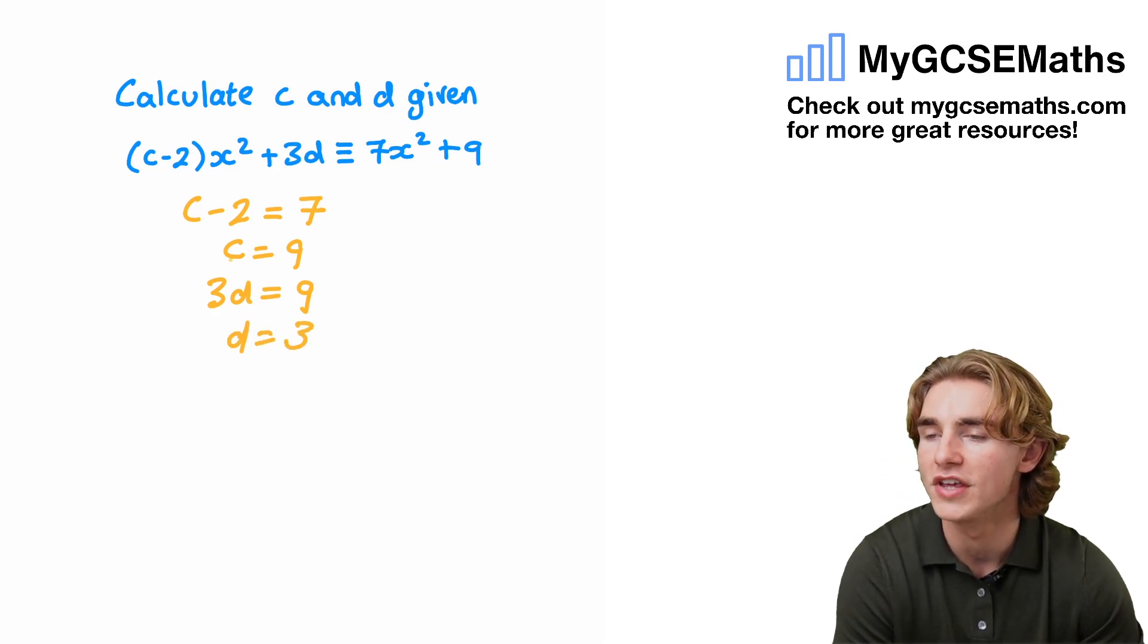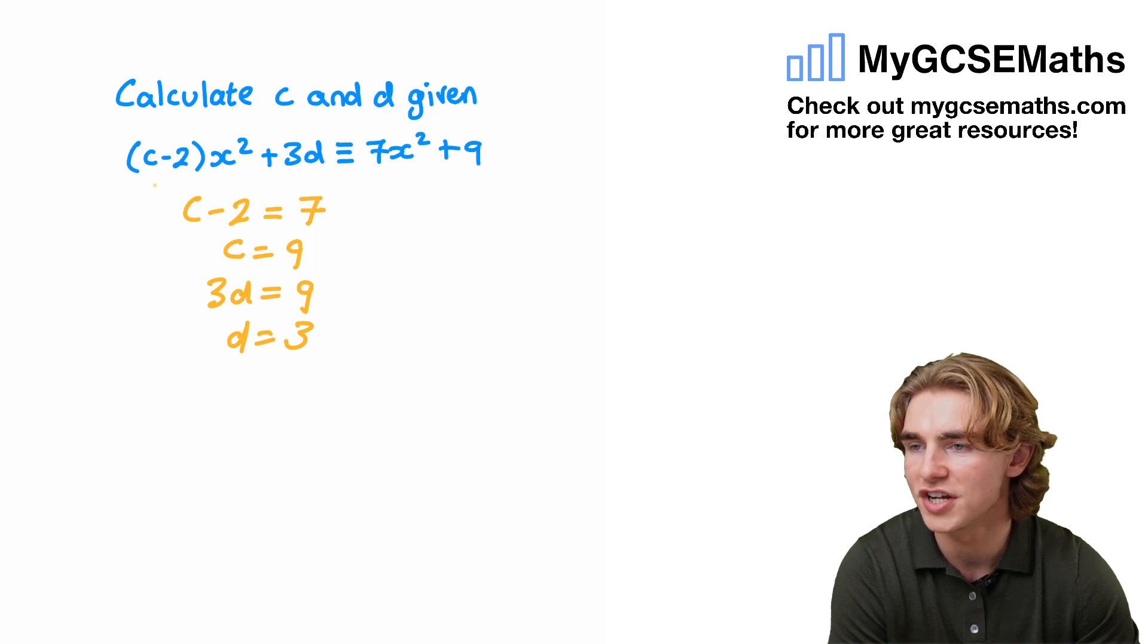So what did we do there? We used our equivalency, we matched up the coefficient of the x² with the coefficient of the x², and we matched up the constant with the constant.